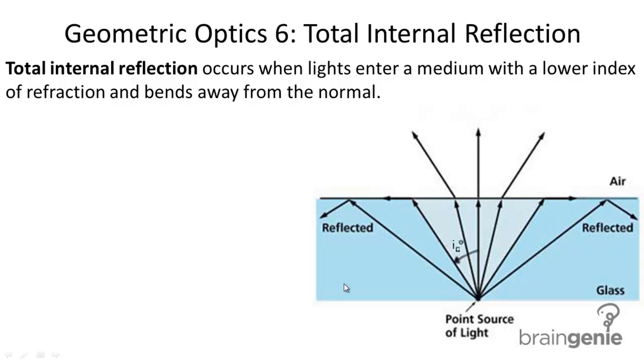In this case, we have light going from glass to air. The index of refraction for glass, n glass, is greater than the index of refraction for air. So you're going into a medium with a lower index of refraction.